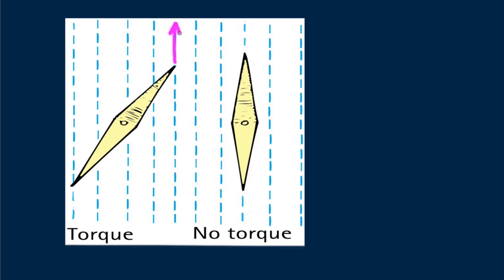We see this with a compass needle. The blue dashed lines show the magnetic field. Although no net magnetic force acts on the needle, a torque does, and sets it into alignment with the magnetic field. The net magnetic force on the needle is zero. When the net torque on the needle is zero, the needle aligns with the magnetic field.